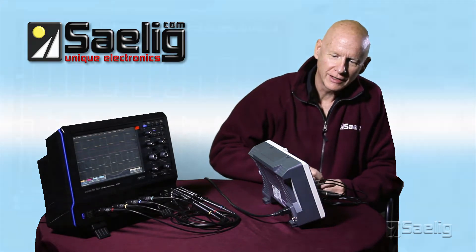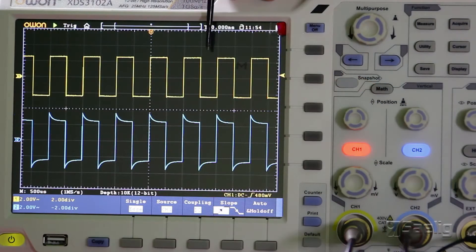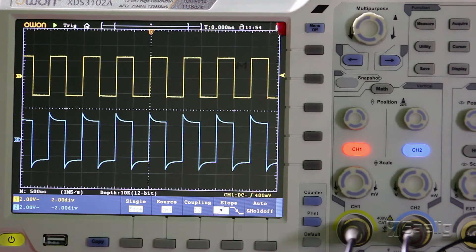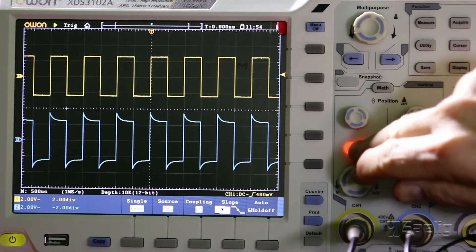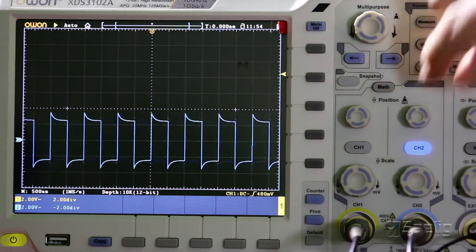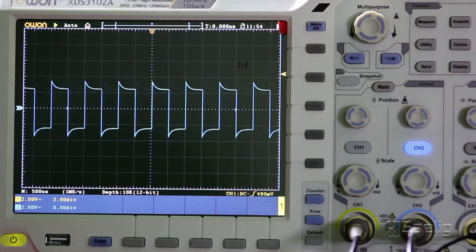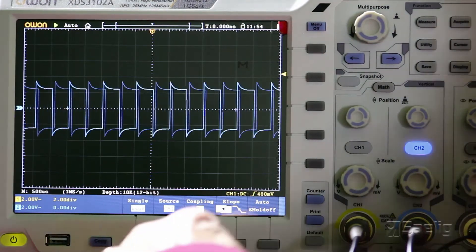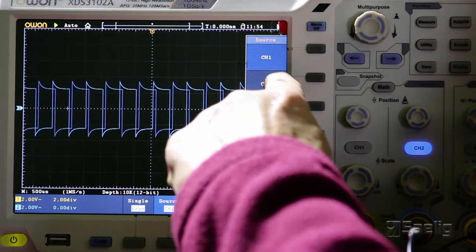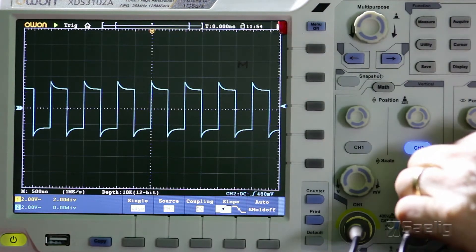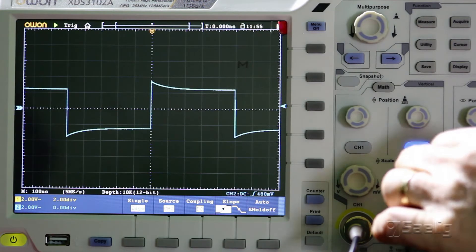You can see that channel one looks pretty good, channel two does not look so good. So we're going to concentrate on channel two right now and turn channel one off and we're going to move this one up. I'll trigger on it, use the touch screen which is nice and now we have a good display of showing what the problem is here.